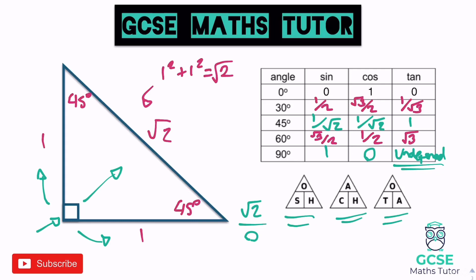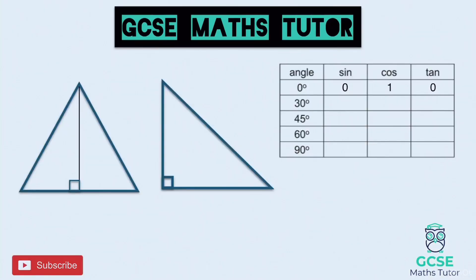So those are the two triangles you need to know to find all of these trigonometric values. Hopefully you've made some good notes. Now have a go yourself: label up the sides of both triangles, work out the two missing lengths — the height of the equilateral triangle and the hypotenuse of the isosceles right-angled triangle. Then write out your SOHCAHTOA triangles and fill in as many of the 12 values in the table as you can.